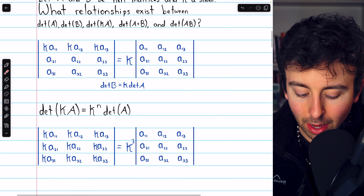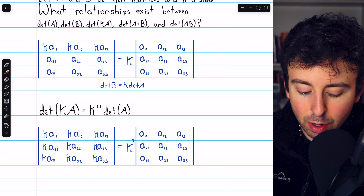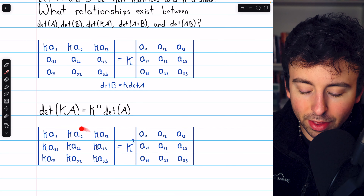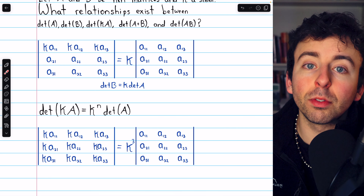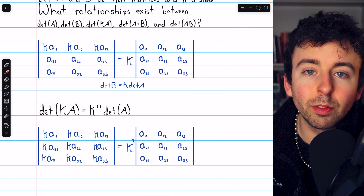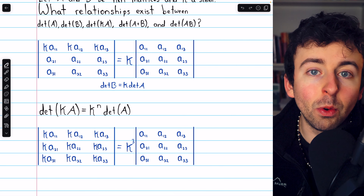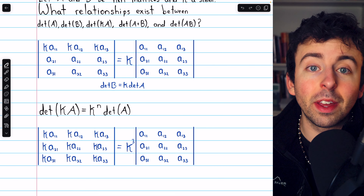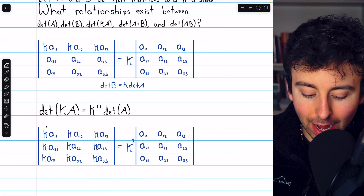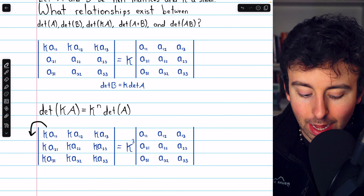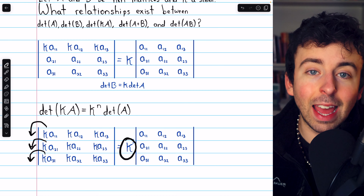For example, if we have the determinant of this matrix, but then we take every row and multiply it by k, the effect will be to just multiply the determinant by k to the 3. There are three rows, so three factors of k. Another way to think of this is that scalars can be taken out of the determinant — they're taken out of each individual row or column. So I could take a k out of the first row, a k out of the second row, and a k out of the third row, and that would give me k cubed.